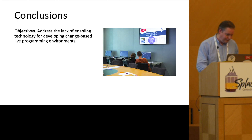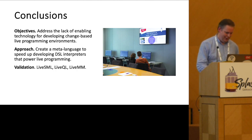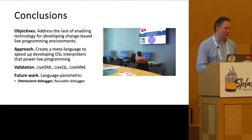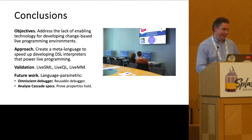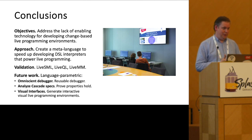Wrapping up: the objectives were to address the lack of enabling technology for developing change-based live programming environments. The approach is a meta-language that speeds up the development of DSL interpreters that power live programming. Validation was done on three case studies: the state machine language, questionnaire language, and machinations. Future work includes omniscient debugging — using cause-and-effect chains for a reusable debugger for each DSL. I also want to analyze Cascade specifications, prove that valid states result from them, and generate visual interfaces automatically. That wraps it up — thank you for your attention.